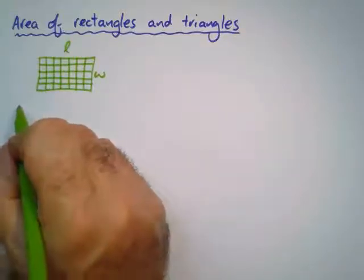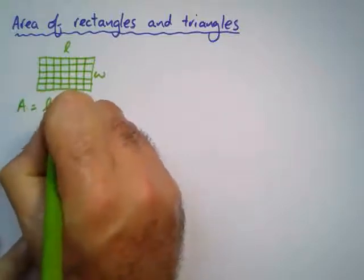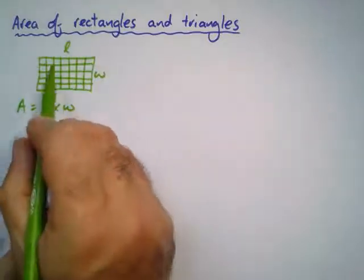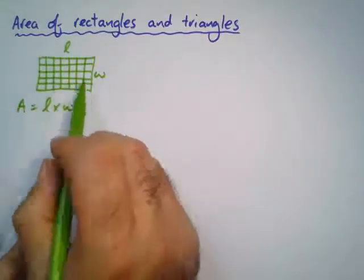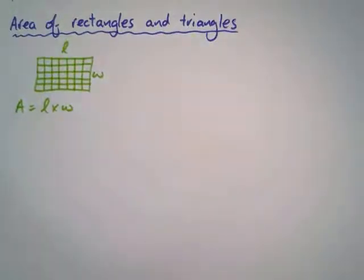So for a rectangle it's pretty easy. We're going to say the area of a rectangle is length times width. Why? Because it will tell us exactly how many square blocks we will have, as long as the units are the same. And that's very important. So length times width is really elementary, you've done this all the way down to primary school.